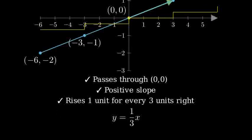And there we have it. We've successfully graphed the line y equals one-third x using slope-intercept form. Remember, the slope tells us how steep the line is, and the y-intercept tells us where the line crosses the y-axis.